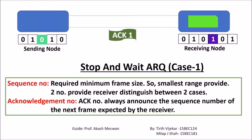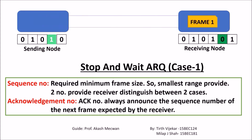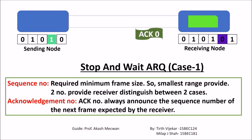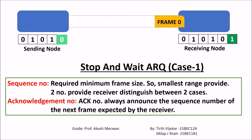At the start, the transmitter assigns frame number zero and sends it. After receiving frame zero perfectly, the receiver generates an acknowledgement for frame zero, requesting the next frame which is frame one, and sends it. The transmitter will also wait for the acknowledgement, and after receiving it, it will send the next frame.